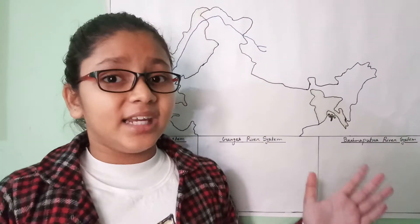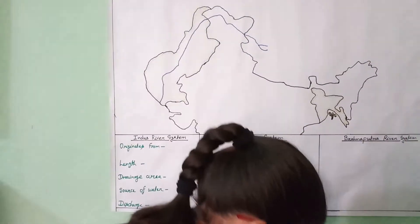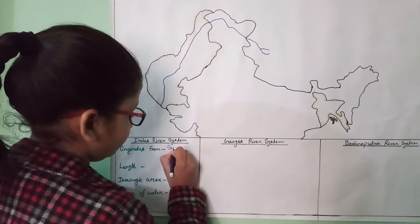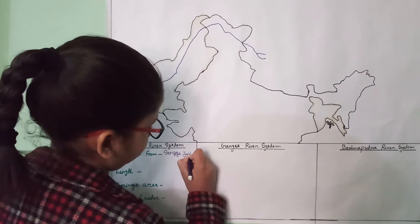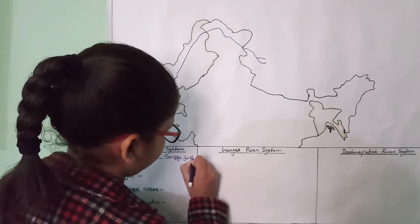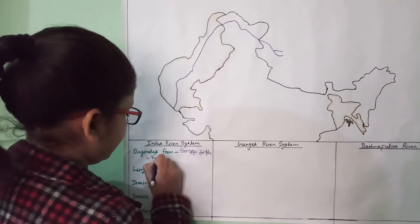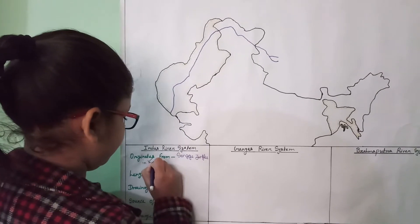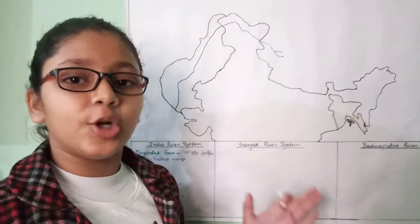In Sanskrit it is called Sindhu. It originates from Senge Zangbo in Kailash Range, which is near Manasarovar Lake.